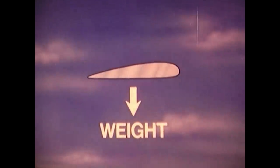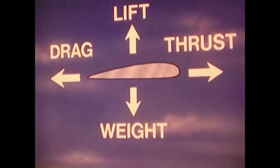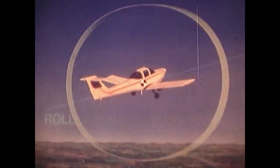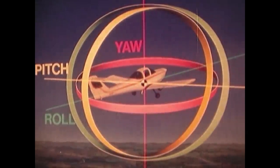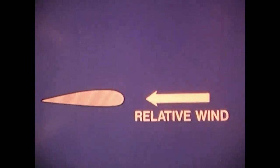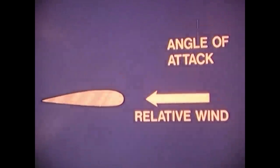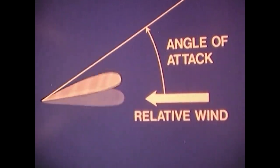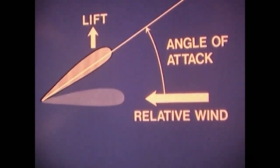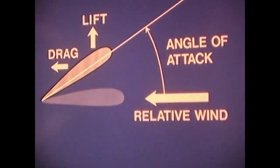Weight, lift, thrust, and drag are terms that are familiar to you. You also know the rotation about the three axes of flight: roll, pitch, and yaw. To understand the spin, there are some other terms you should be familiar with. Relative wind is the direction of airflow with respect to the wing as it moves through the air. Angle of attack is the angle formed by the relative wind and the chord line of the wing. Coefficient of lift is a numerical representation of the lift generated by a particular wing at a given angle of attack. Coefficient of drag is a number representing drag, derived from the same factor — angle of attack.